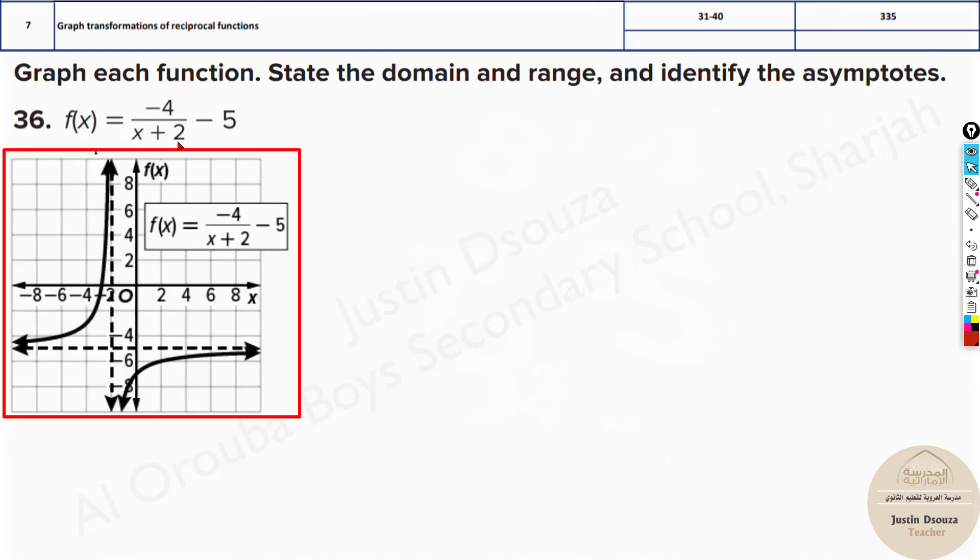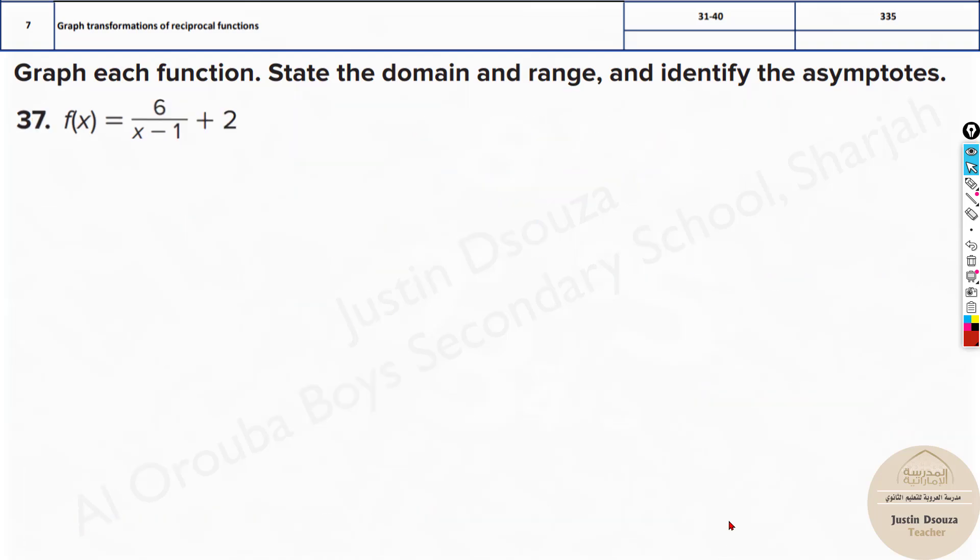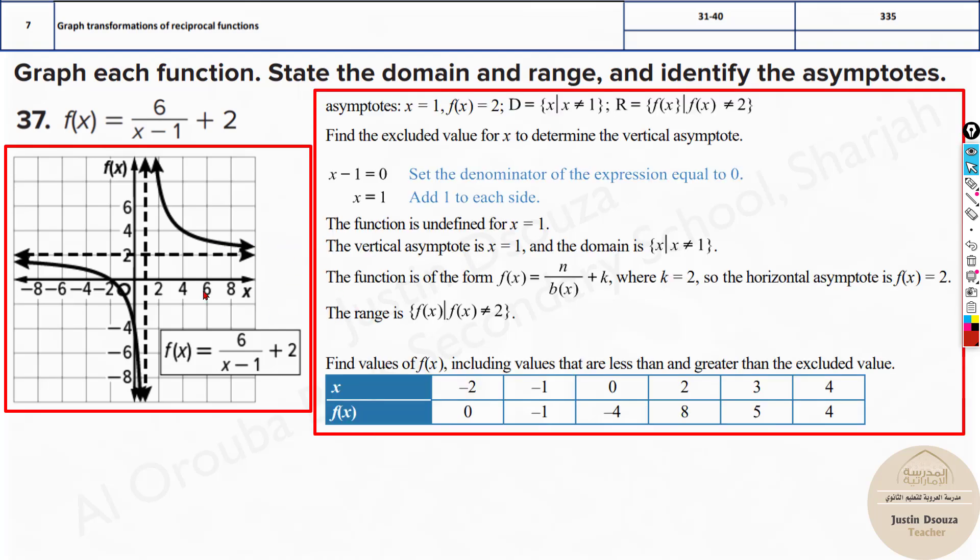Here you can see the horizontal asymptote will be at minus 5. Vertical will be at the denominator equal to 0. It will be minus 2. So that's how we can easily solve all these problems.